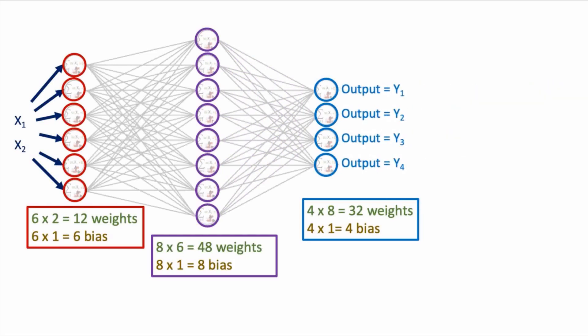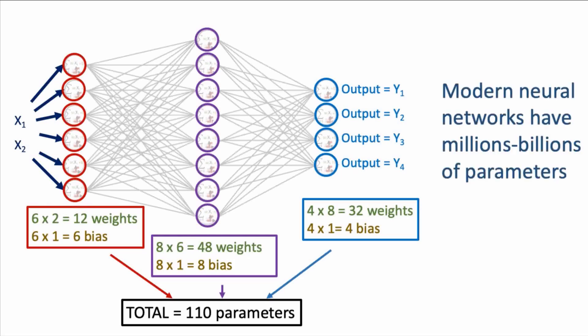Summing together all the parameters for all three layers of our neural network, we have a total of 110 parameters. Our example here is a relatively small neural network, and modern deep learning neural networks can have millions or even billions of parameters.